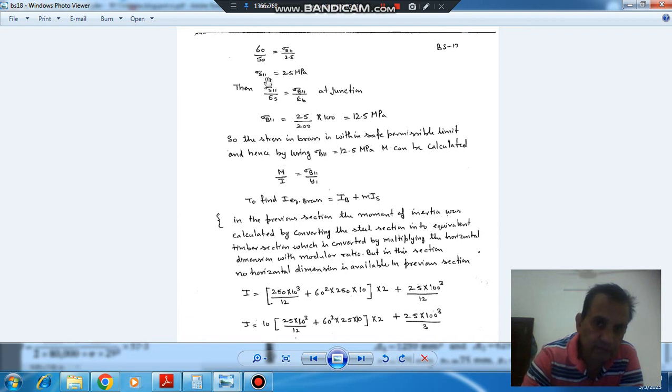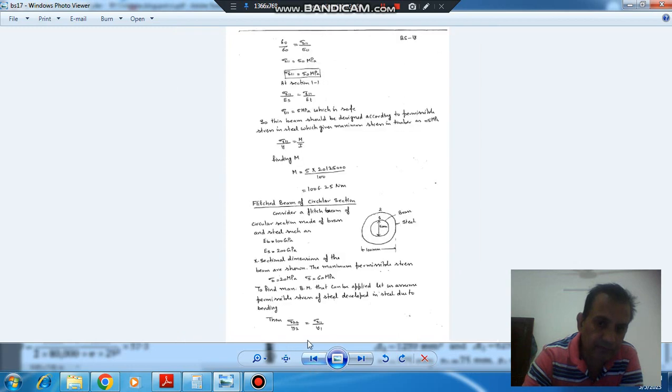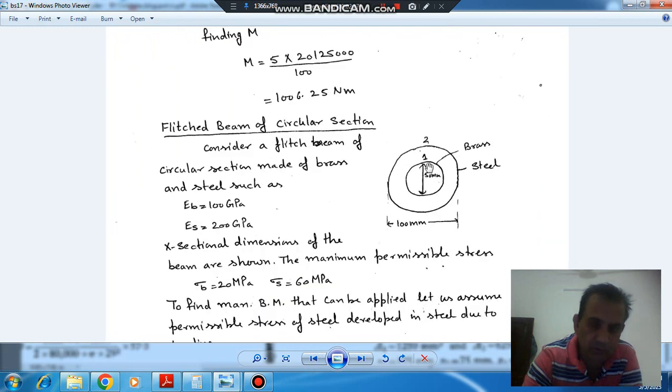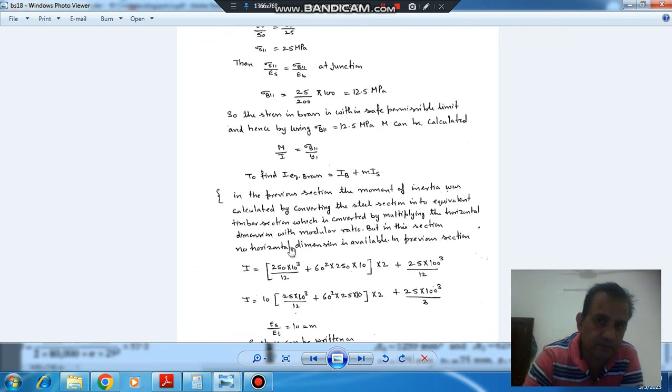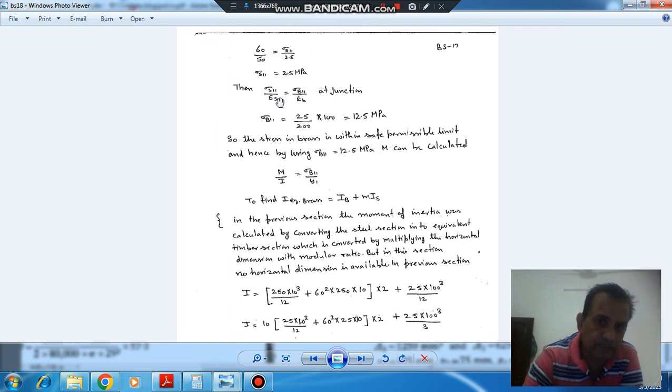And at 1-1 is the common junction for steel and brass. At 1-1, the stress in the steel and the stress in the brass will be same. So σ_S1 by E_S is equal to σ_B1 by E_B, where E should be the same.